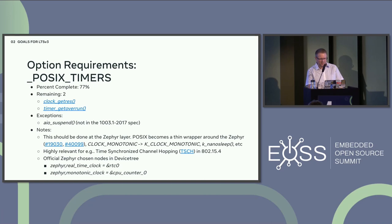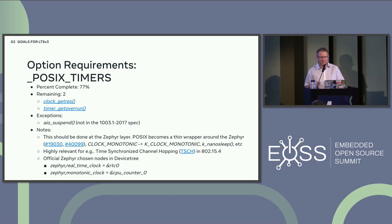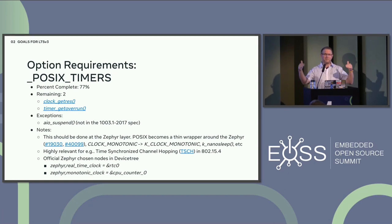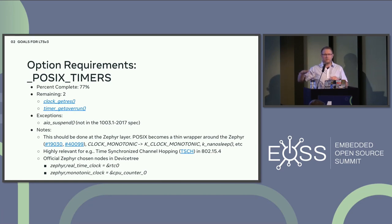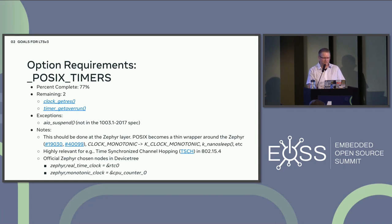For time-synchronized channel hopping for 802.15.4, Florian has a strong desire to implement this. We want POSIX to be a very thin wrapper around Zephyr core features — so for timers, we'd add K_CLOCK_MONOTONIC, K_CLOCK_REALTIME, and just add the constants for the POSIX subsystem.